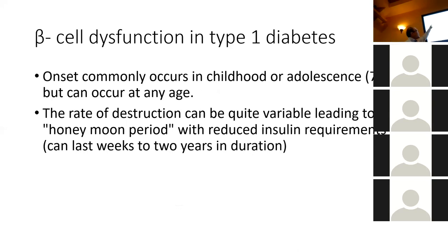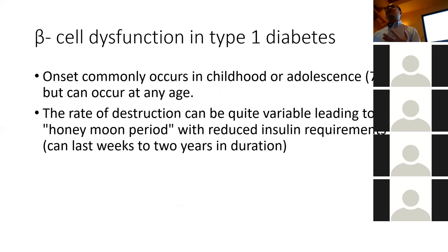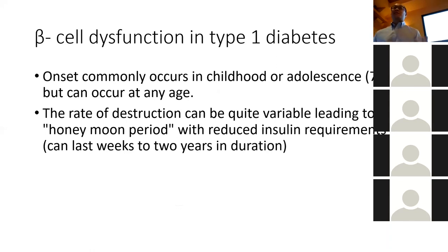Type 1 diabetes usually happens in adolescence, but it doesn't have to. There have been case reports of people getting type 1 diabetes even in their eighth decade of life — diagnosed at age 80. There are also very young kids who have type 1 diabetes, getting it at six months or 12 months old, and they have to give a six-month or one-year-old insulin right away.